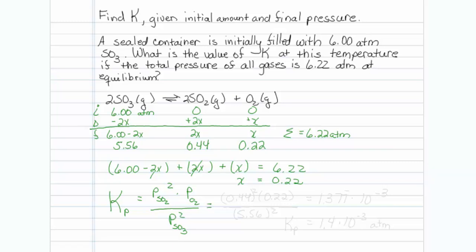So that would be 0.44 squared times 0.22 over 5.56 squared. Putting this into my calculator, I get a value of 1.377, quite a few sevens, times 10 to the minus 3.